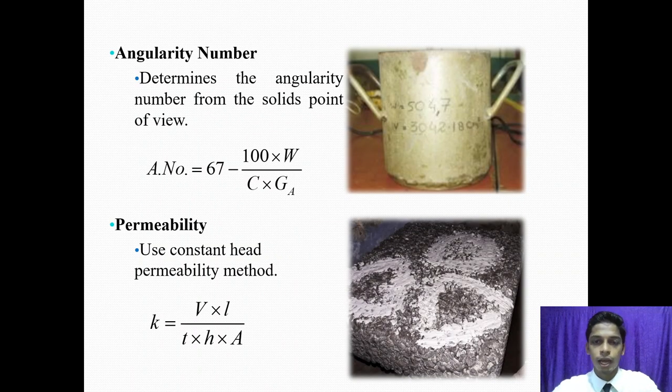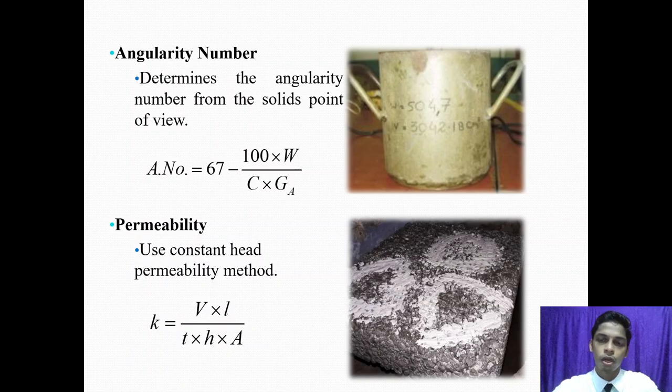Angularity number. Angularity number is determined from the solids point of view. To determine the angularity, fill the aggregate in the testing cylinder and determine the mass of the aggregate as per IS recommendation. And then determine the volume of the cylinder by water and determine the angularity number using the specific gravity of the aggregate. To calculate the total void in it, we add 33 in angularity number. The formula is shown in the slide.